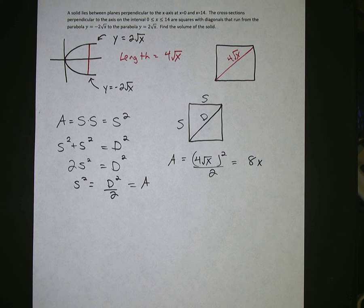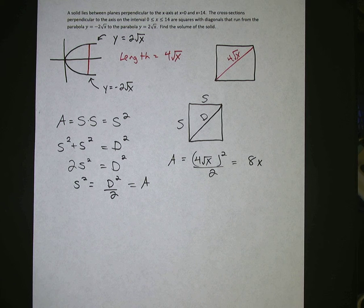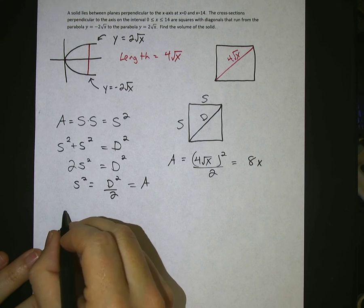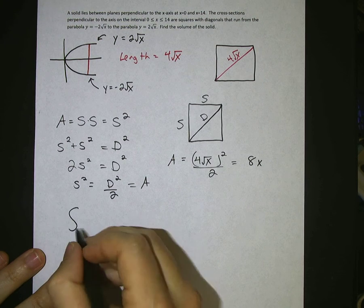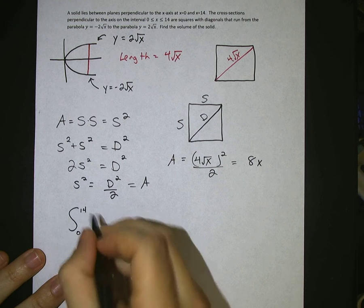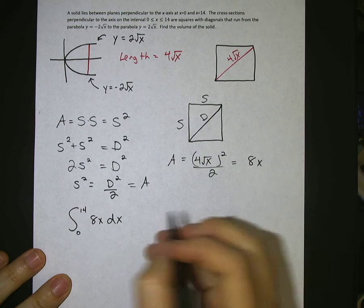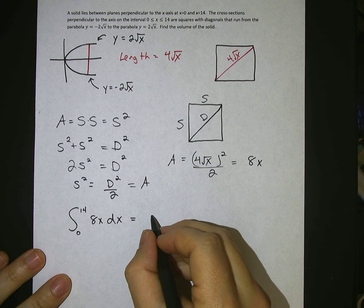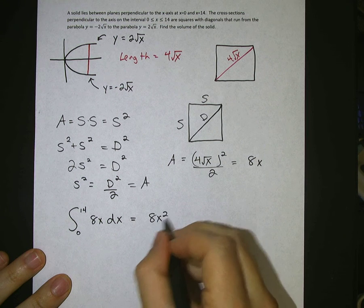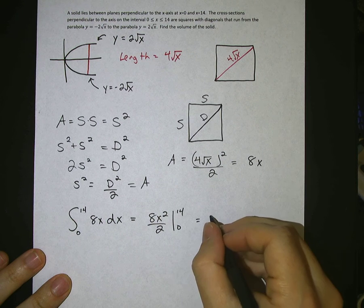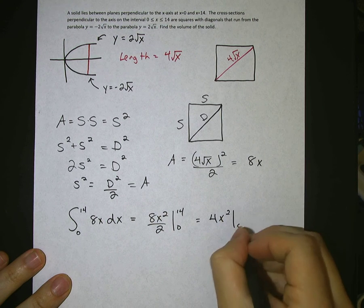Okay, now that we have the area function, we just need to integrate it from 0 to 14. So let's set up our integral from 0 to 14, 8x dx, which is 8x squared over 2 from 0 to 14, or 4x squared from 0 to 14.